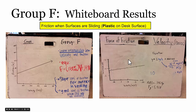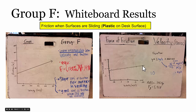The groups that investigated the relationship between velocity and the force of friction had a little harder time interpreting their data, but they finally landed on the idea that there's a slight linear relationship between velocity and the force of friction — meaning that the faster objects are moving when they're sliding, there's a slightly larger force of friction that exists between those two surfaces.